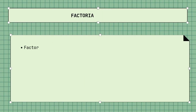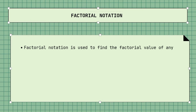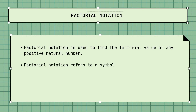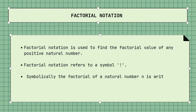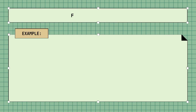First, what is factorial notation? Factorial notation is used to find the factorial value of any positive natural number. Factorial notation refers to a symbol of exclamation point, as you can see, and symbolically, the factorial of a natural number n is written as n factorial. The factorial of a number is equal to the product of all natural numbers in sequence from 1 to n.